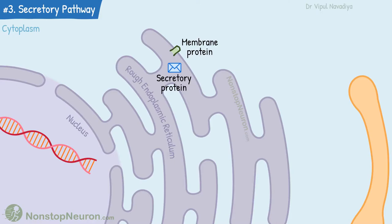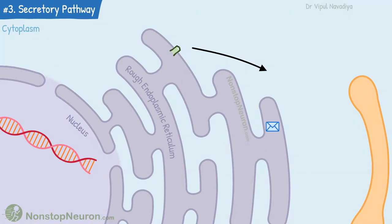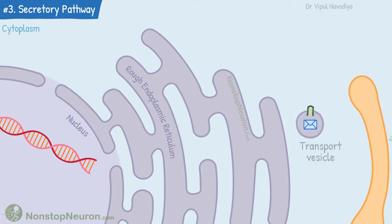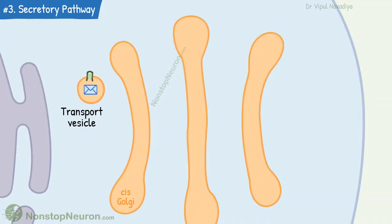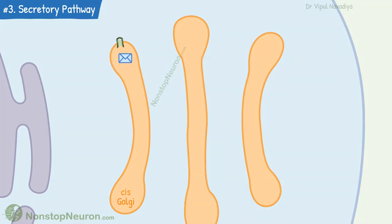Now the third point: the secretory pathway of proteins. This pathway applies to both secretory proteins and membrane proteins. They are both synthesized in the rough endoplasmic reticulum. From here, they travel to the outer side of the network — secretory proteins travel in the lumen and membrane proteins travel along the membrane. They are packed in transport vesicles, where secretory proteins stay in the lumen and membrane proteins remain on the membrane. These vesicles fuse with the cis-Golgi system, which is the innermost cisterna in the stack. From here, the proteins pass through each cisterna in the Golgi complex, transported by vesicles.